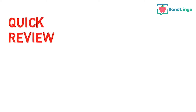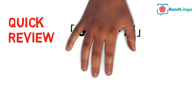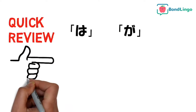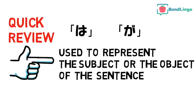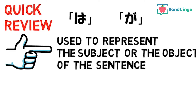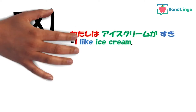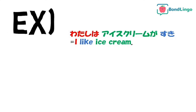First of all, for people who don't know the usage of ha and ga, I will briefly explain their use. Both ha and ga are used to represent the subject or the object of the sentence. For example: 'I like ice cream.'